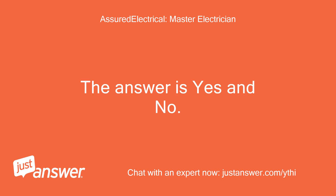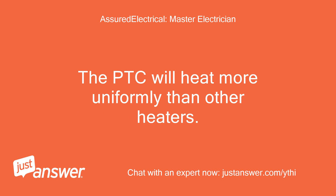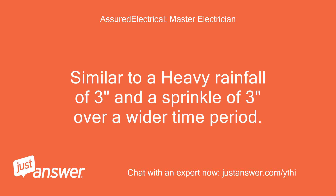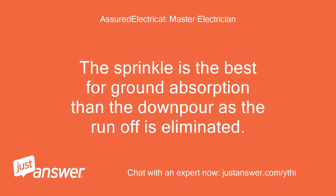The answer is yes and no. The PTC will heat more uniformly than other heaters. Instead of the constant up 100% and down 100%, it will self-regulate and control a temperature more stable to the area — similar to a heavy rainfall of 3 inches versus a sprinkle of 3 inches over a wider time period. The sprinkle is best for ground absorption, as runoff is eliminated.